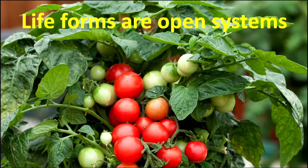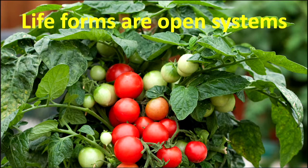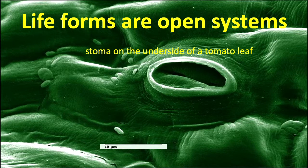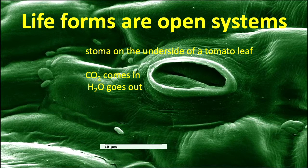Let's look a little more at life on Earth. Life forms are open systems — they have to exchange liquids and gases to get nutrients from the environment. Here's a tomato plant. If you look at the underside of a leaf, you'll see a hole called a stoma, which exchanges gases: CO2 comes in and H2O goes out.